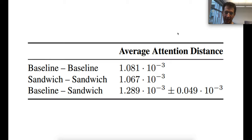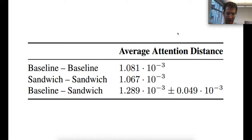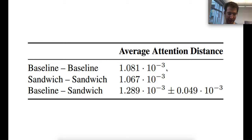One might argue this difference is simply because sandwich models perform better. To address that, I took two baseline models where, due to high baseline variance, one was significantly worse than the other — about one perplexity apart. The average attention distance between those two baselines was the same as between any two baselines. So the difference in attention patterns is not solely due to the sandwich models having better performance.